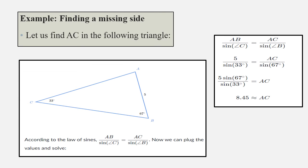Example: Finding a missing side. Let us find AC in the following triangle. According to the law of sines, AB/sin C = AC/sin B. Now we can plug the values and solve. After plugging the values, we have 5/sin 33° = AC/sin 67°. So AC = 5 × sin 67°/sin 33° = 8.45.